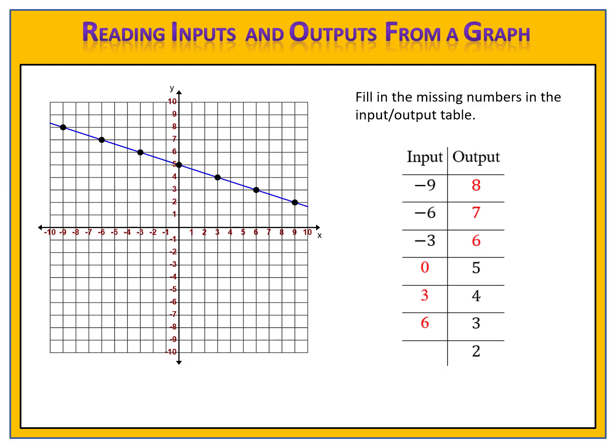Let's try one more. This time we're told the output is 2 and we want to find the input. See if you can find the input for this exercise. Please pause the video here. Let's see how you did. We know we have a point on our graph where the y value, or the output, is 2, and we want to find the x value, or the input. We draw a line across our graph and look where the line crosses through our graph. It happens at this point right here. The input, or x value, is 9. The point is 9, 2, and therefore the input is 9.